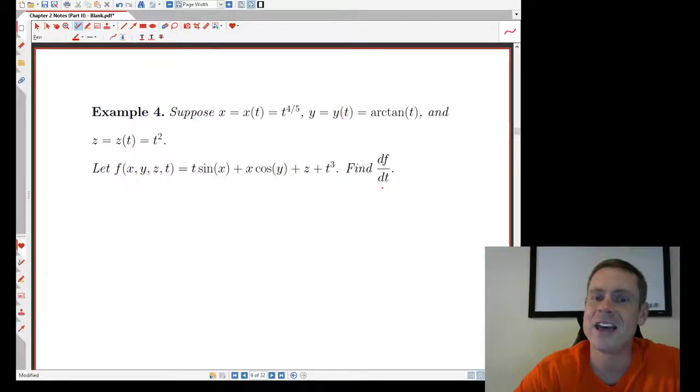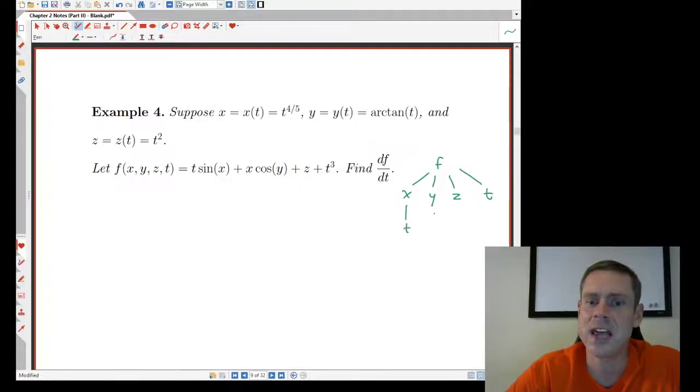So I'm going to draw a similar tree, f depends on x, y, z, and t here. And each of the x, y, and z are all dependent on t themselves. So if I draw this out,